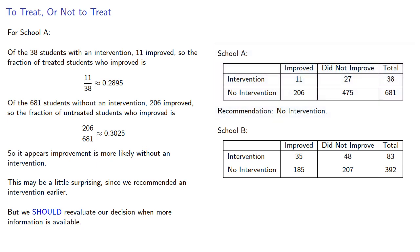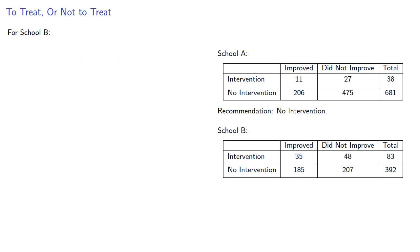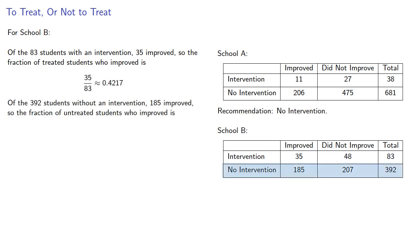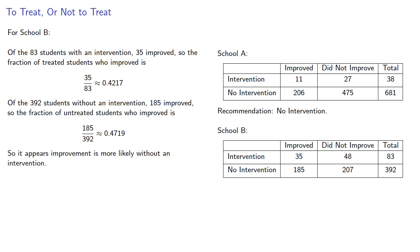A normal person would stop here. But mathematicians are not normal people. Let's take a look at school B. Of the 83 students with an intervention, 35 improved, so the fraction of treated students who improved is about 42%. Of the 392 students without an intervention, 185 improved, so the fraction of untreated students who improved is about 47%. It appears improvement is more likely without an intervention, and so we would recommend no intervention.